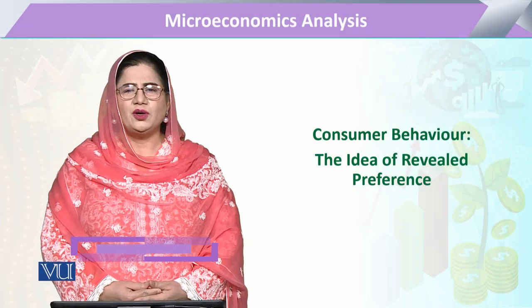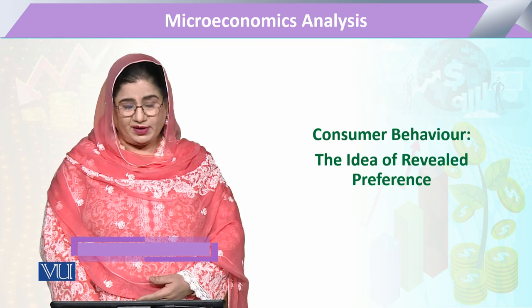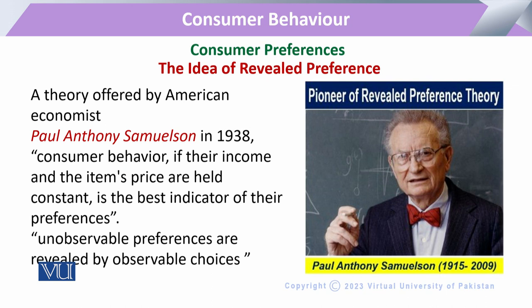Under the chapter of consumer behavior, we are going to study the idea of revealed preference — a very unique idea that was presented by Paul Samuelson. When we study consumer demand, there are two very evident ideas that we mostly study: one related to utility, that is the cardinal approach, and the other the ordinal approach. This is the third idea, that is the revealed preference.